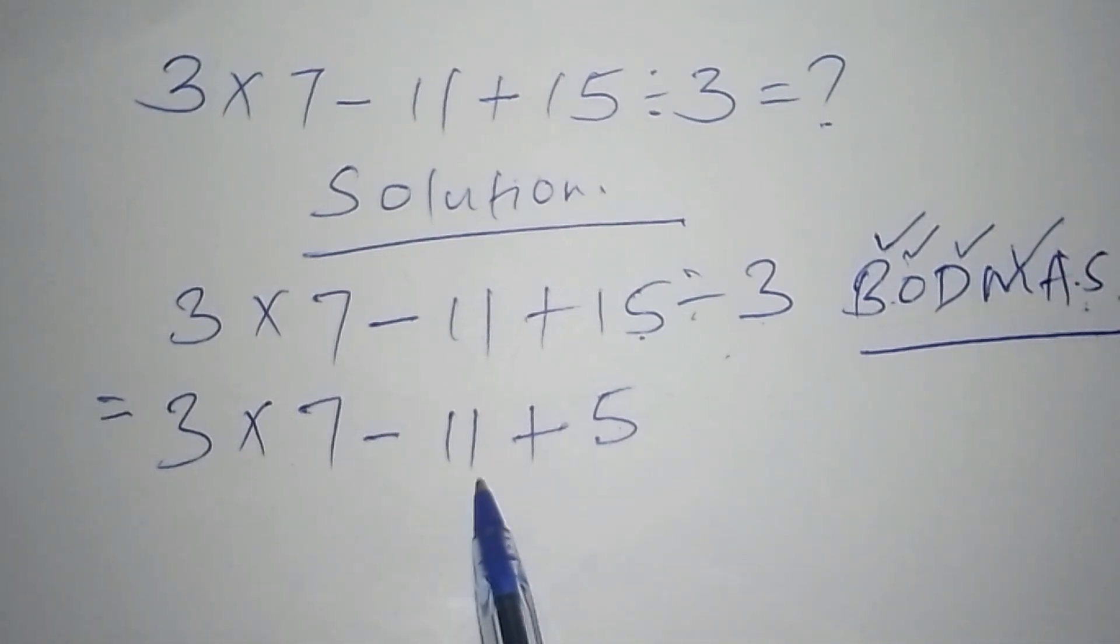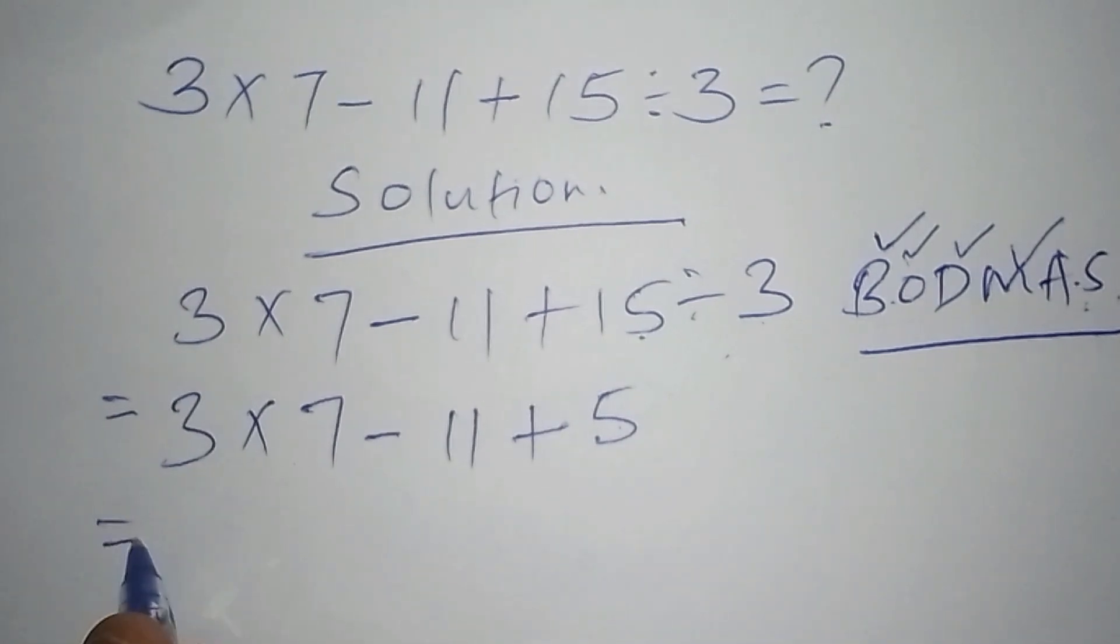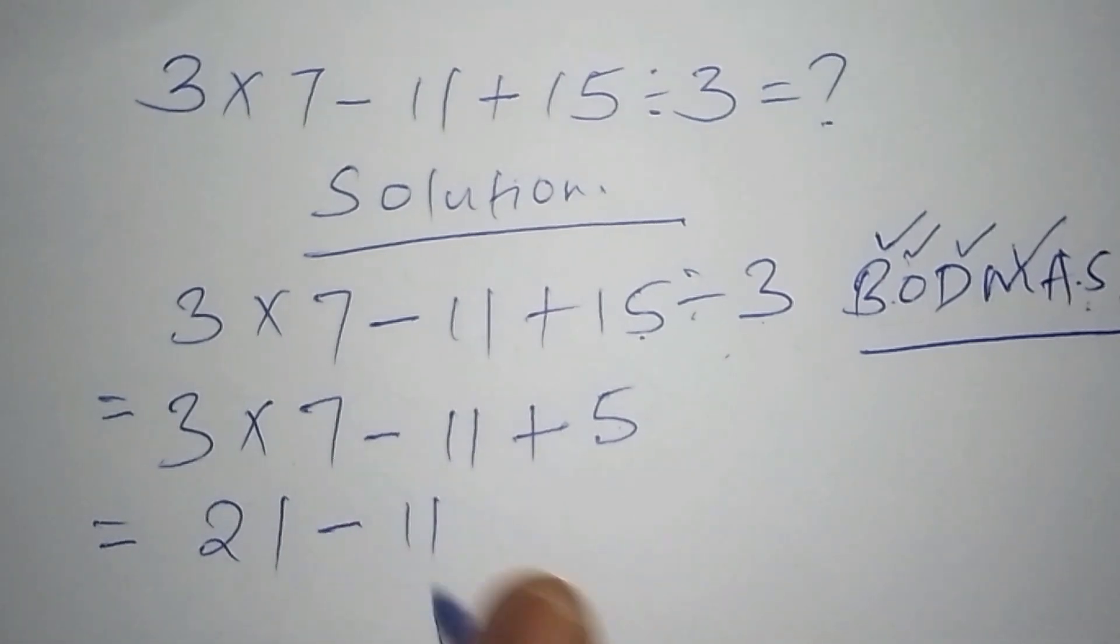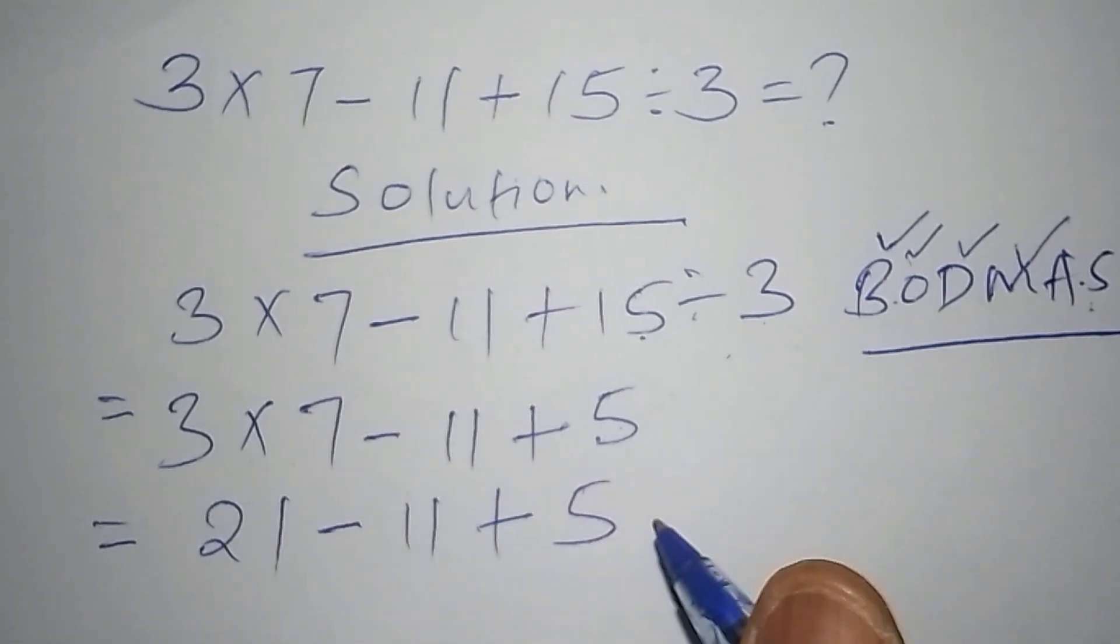From there we shall work out this other side, 11 plus 5. Here we shall now have 3 multiplied by 7, that is 21, then 21 minus 11 plus 5.